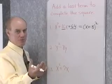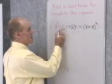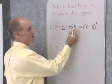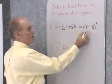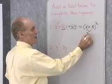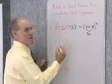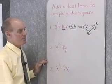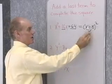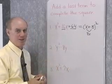You don't have to take my word for it — you can check it. The square of x is x squared. The square of 8 is 64. If I multiply these together, I get 8x times 2, which is 16x. So you can see that x plus 8, quantity squared, is this trinomial right here.